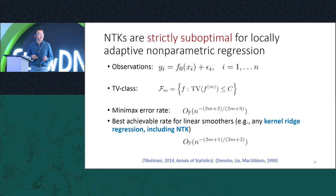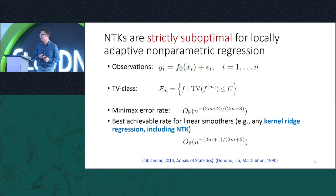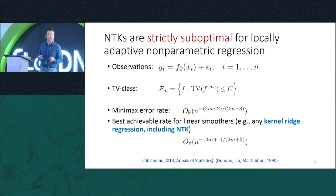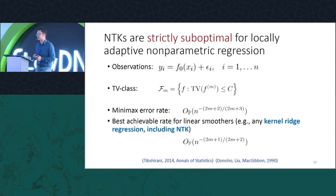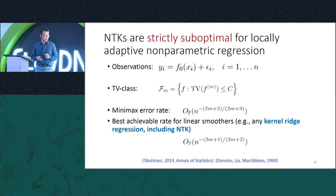To make this concrete, take m equal to one — this captures piecewise linear functions. The optimal estimator gives you n to the minus four-fifths, but all linear smoothers can only achieve n to the minus three-quarters. So with large n there could be orders of magnitude difference between these families of approaches.